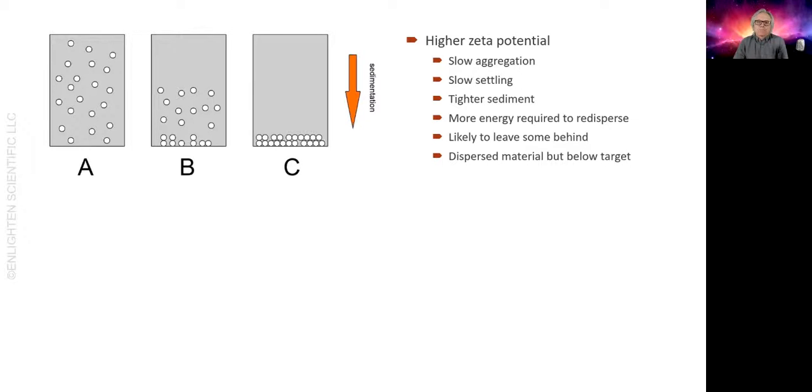Let me talk about sedimentation and redispersion processes and how it can be affected by zeta potential. If you have a high zeta potential, it's likely you will slow any aggregation, and as a result you'll get slow settling. This will allow a tight sediment to form that will require considerable energy to redisperse. This is made worse by increasing viscosity.